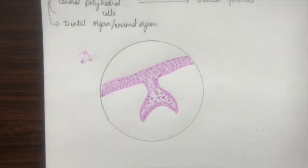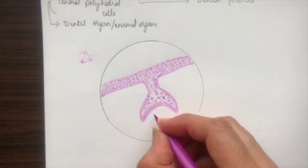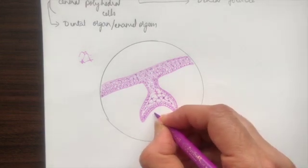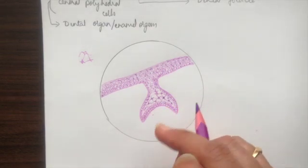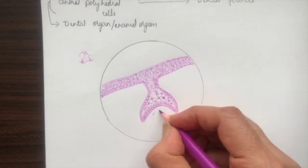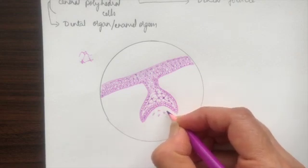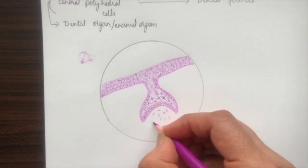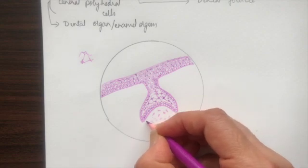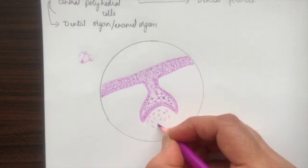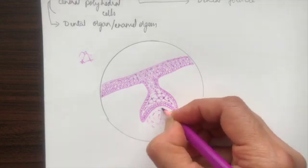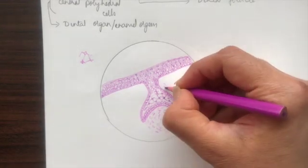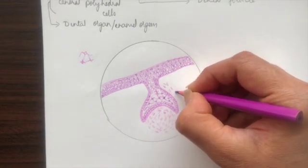Next, we draw the ectomesenchymal condensation in the cap area — those are the dental papillary cells. We draw fibroblasts and differentiated mesenchymal cells inside this region.